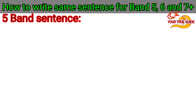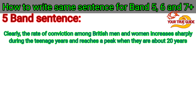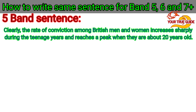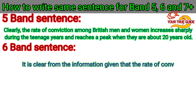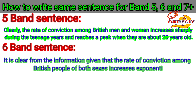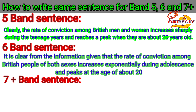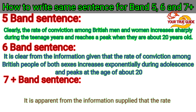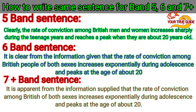The fourth sentence with 5 bands is: 'Clearly, the rate of conviction among British men and women increases sharply during the teenage years and reaches a peak when they are about 20 years old.' For band 6: 'It is clear from the information given that the rate of conviction among British people of both sexes increases exponentially during adolescence and peaks at the age of about 20.' For 7 plus bands: 'It is apparent from the information supplied that the rate of conviction among Brits of both sexes increases exponentially during adolescence and peaks at the age of about 20.'